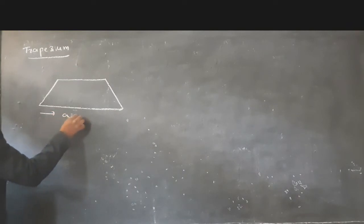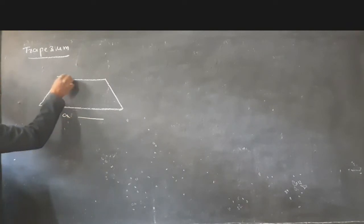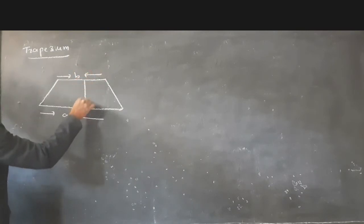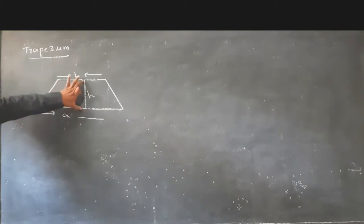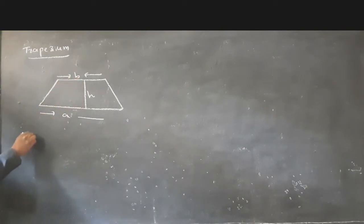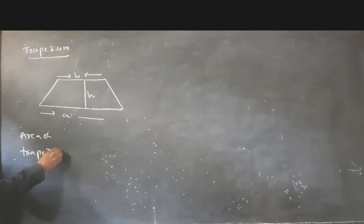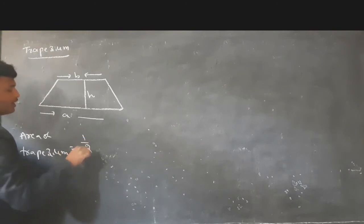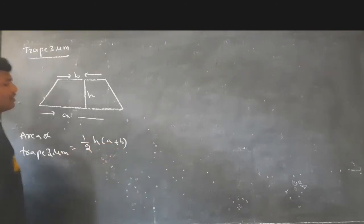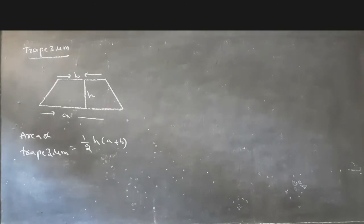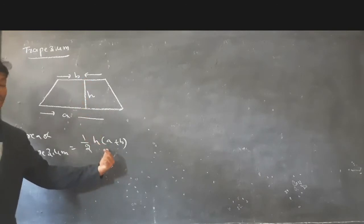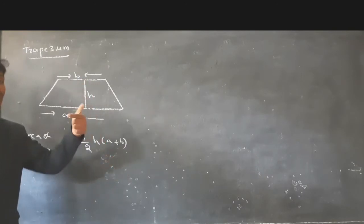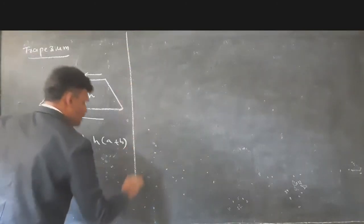Area of a trapezium: a trapezium has two parallel sides. The length of one parallel side is A, the other is B, and H is the perpendicular height — the distance between the two parallel sides. The area of a trapezium is half into H into (A plus B).